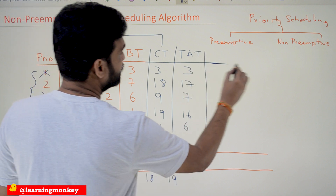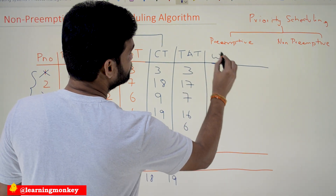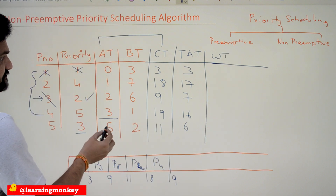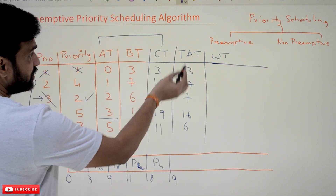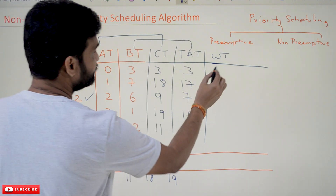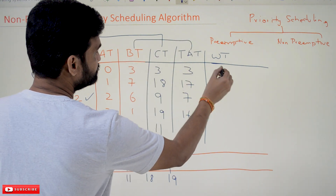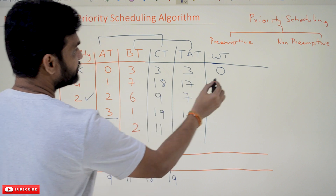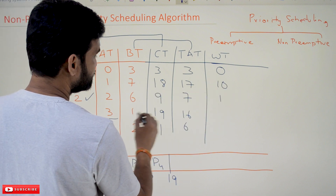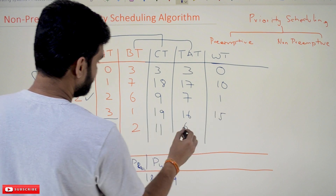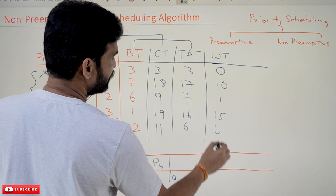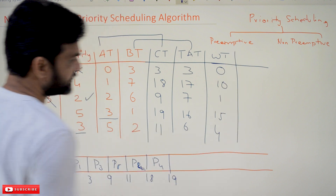What about waiting time? Waiting time is turnaround time minus burst time. For P1: 3 minus 3 = 0. For P2: 17 minus 7 = 10. For P3: 7 minus 6 = 1. For P4: 16 minus 1 = 15. For P5: 6 minus 2 = 4. These are all the waiting times.